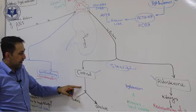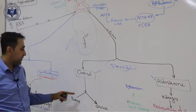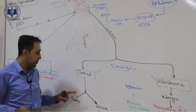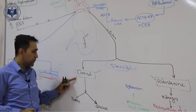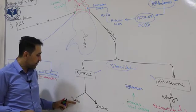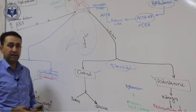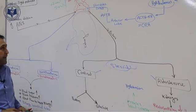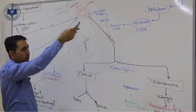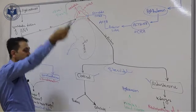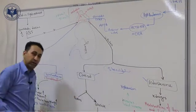Cortisol has targets within several organs and tissues. Its main important function is converting proteins to glucose. That's why prolonged long-term stress leads to increasing blood sugar.